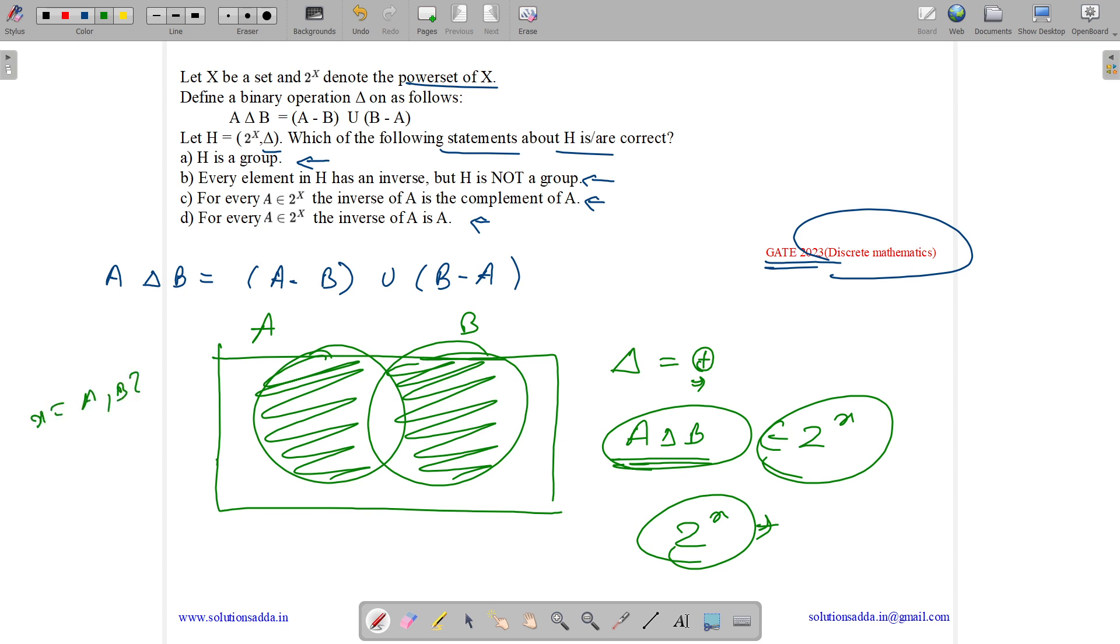As 2 to the power X is the power set of X and has all elements. Like suppose if X is A comma B, then what is power set? It has phi, A, B, and A comma B. It has all the things that can occur on the elements of X. So thus it will be closed for sure. So closure property is satisfied.